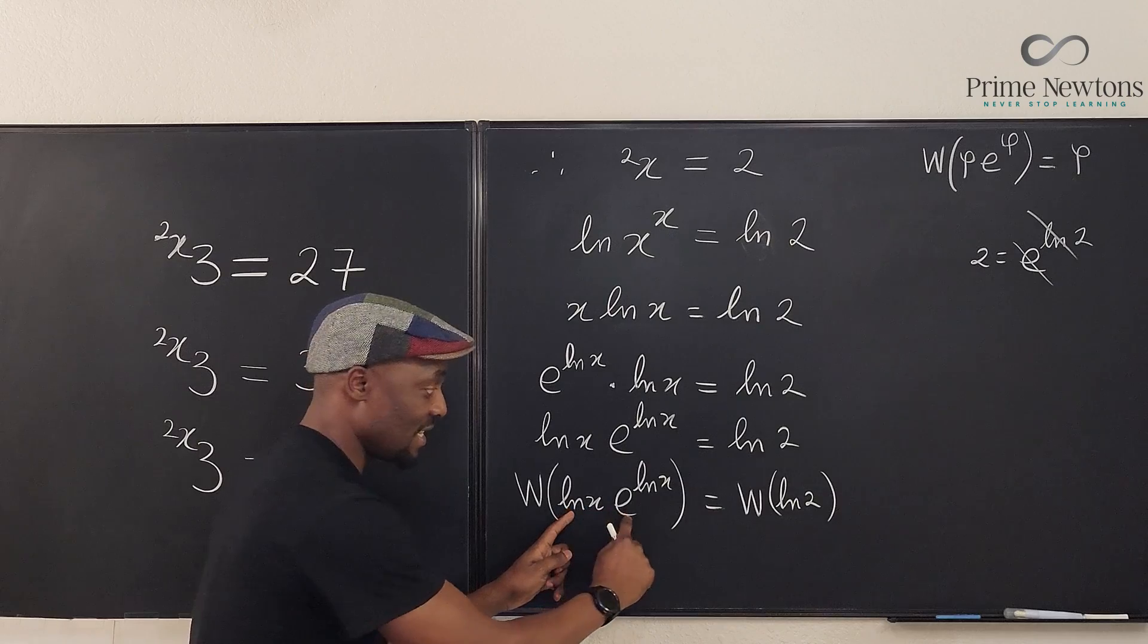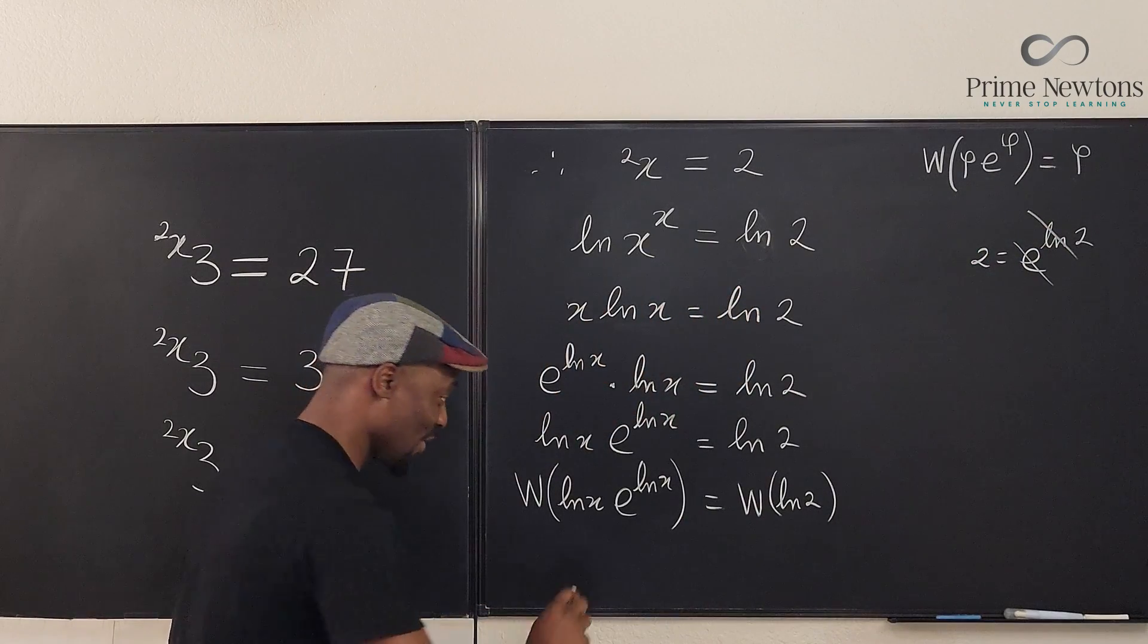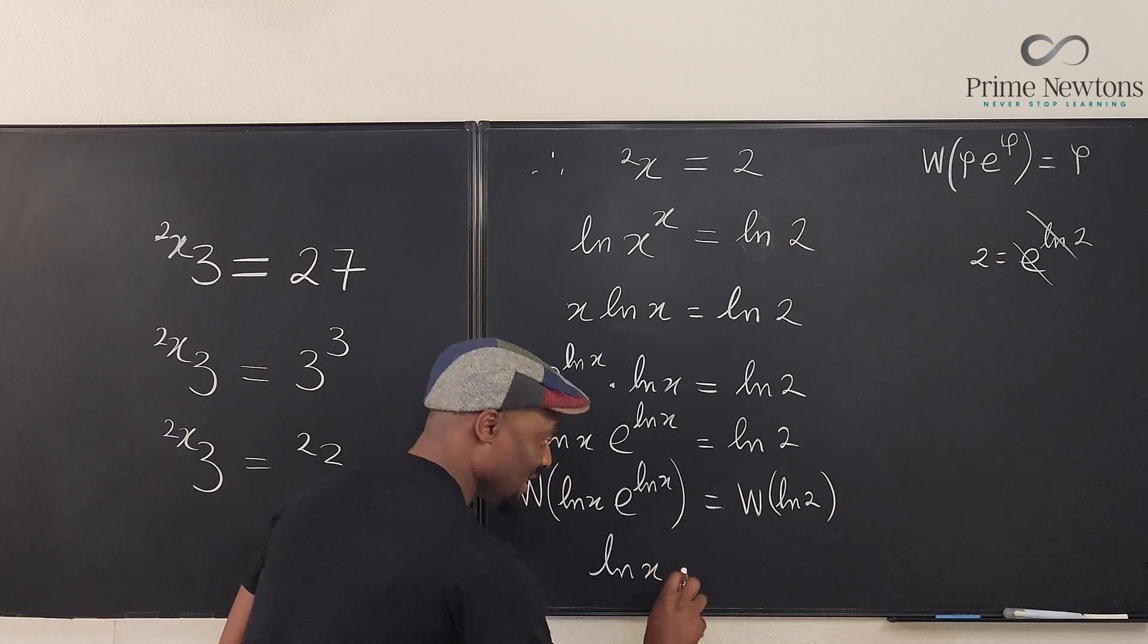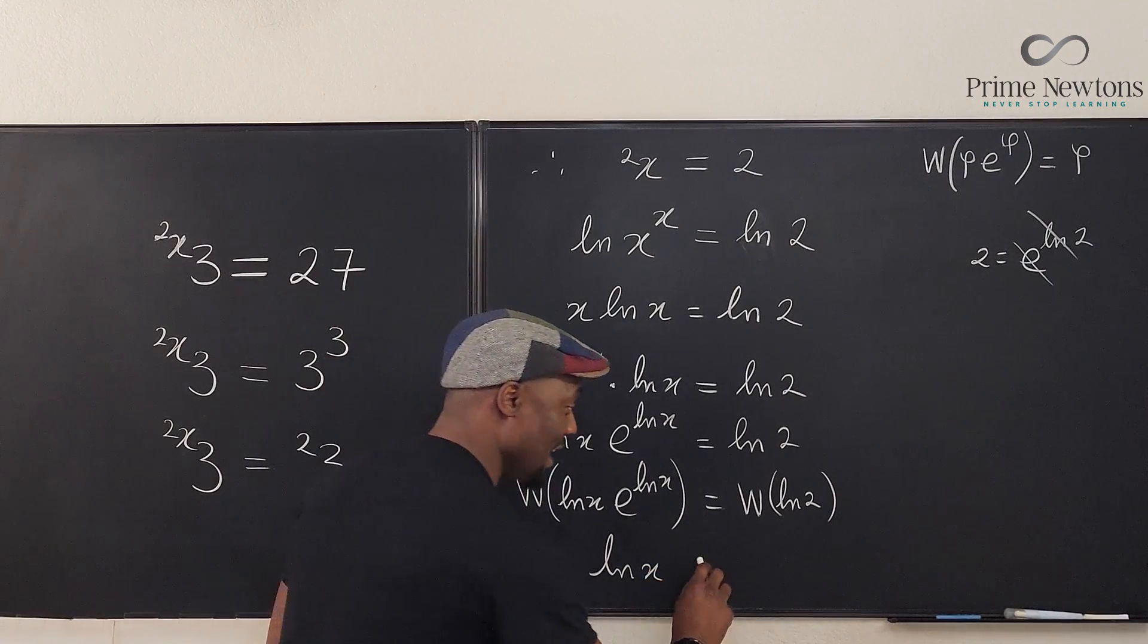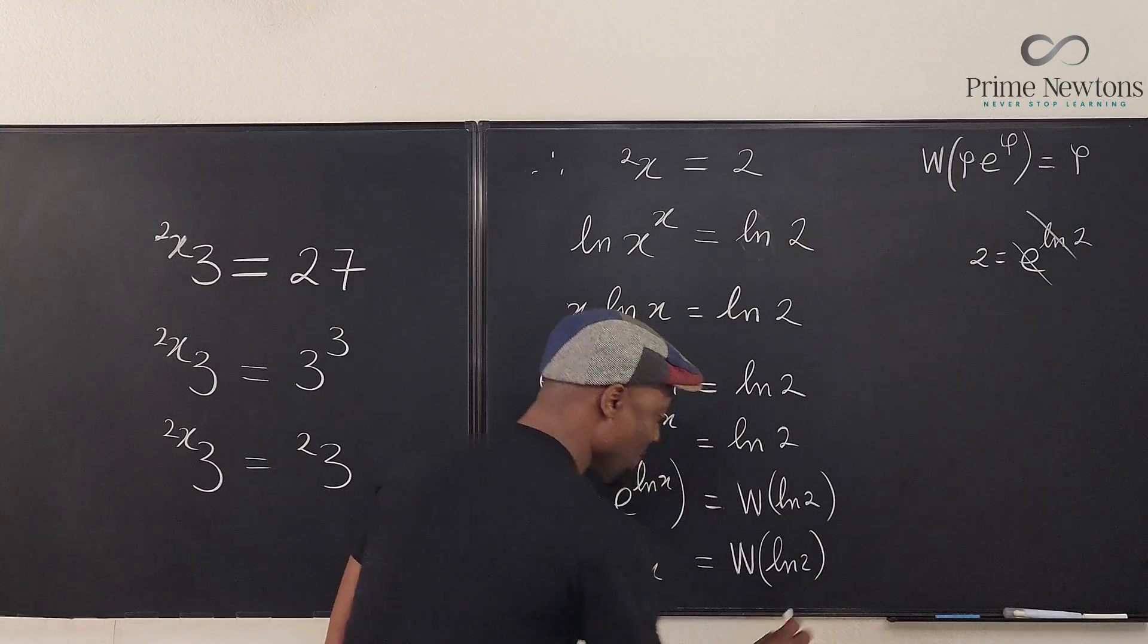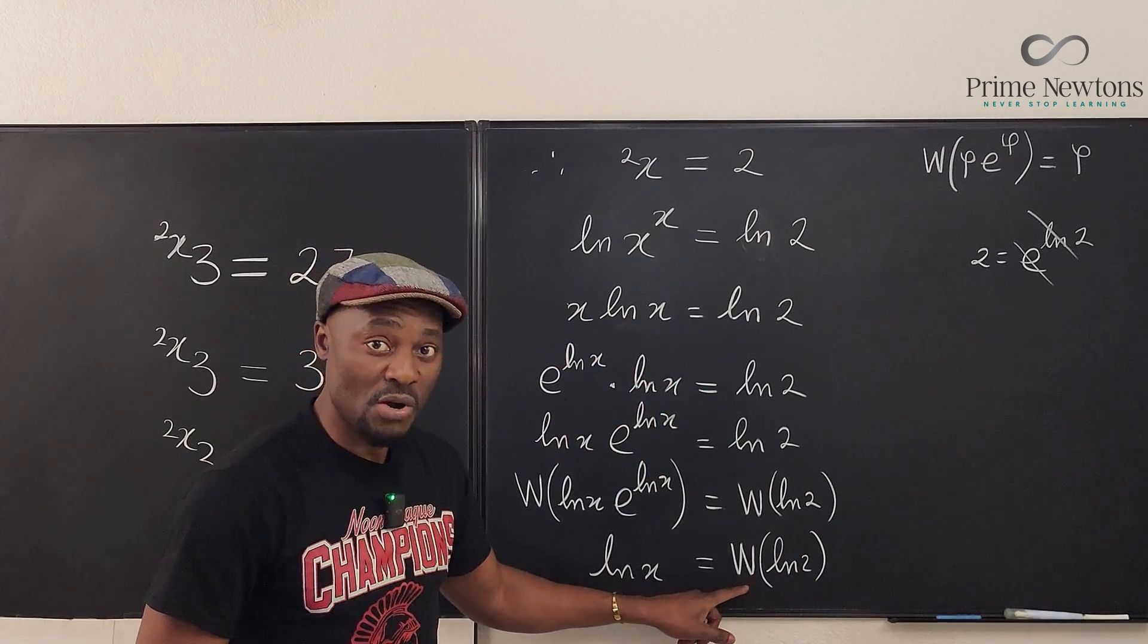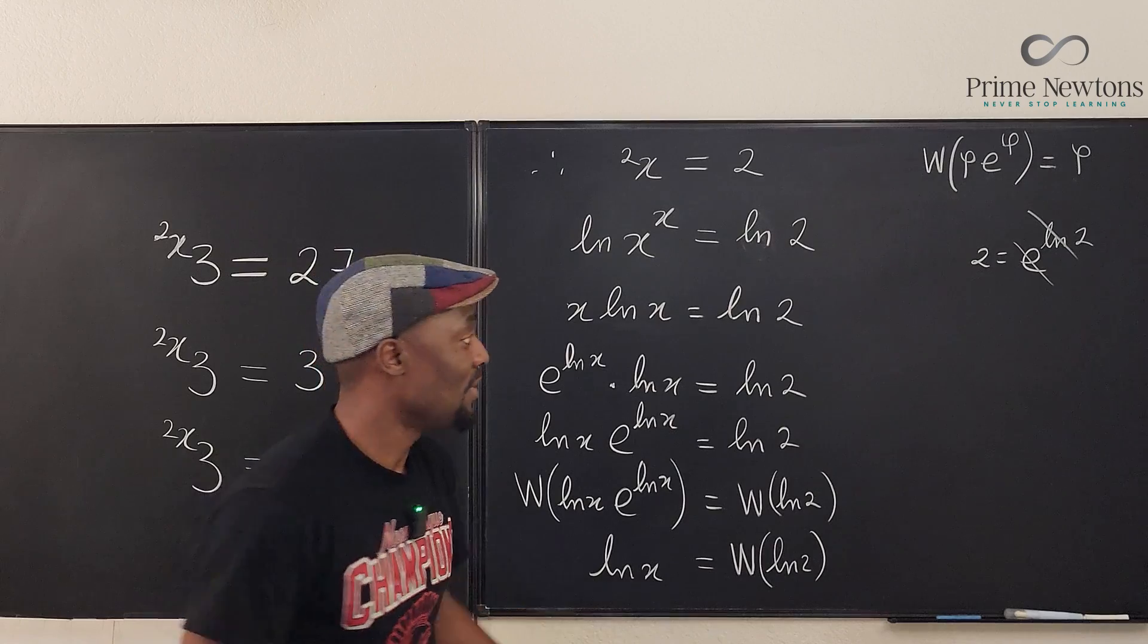If you take the W of both sides, ln of x times e to the ln of x, you're going to get the W of the natural log of 2. And see how beautiful this comes out. Remember, you have this e to this, which is exactly what we have here. You're going to get your natural log of x out. Yes! And what do we have on the right? This. You don't need to do anything about this. So the natural log of x is the Lambert W or the products log of the natural log of 2.